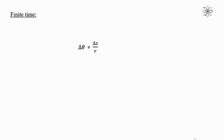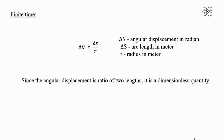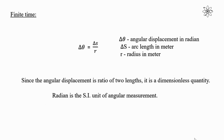For finite time, delta theta is angular displacement in radians, delta S is arc length in meters, and R is the radius in meters. As you can see, the angular displacement is the ratio of two lengths. Hence it is a dimensionless quantity. Radian is the SI unit of angular measurement.